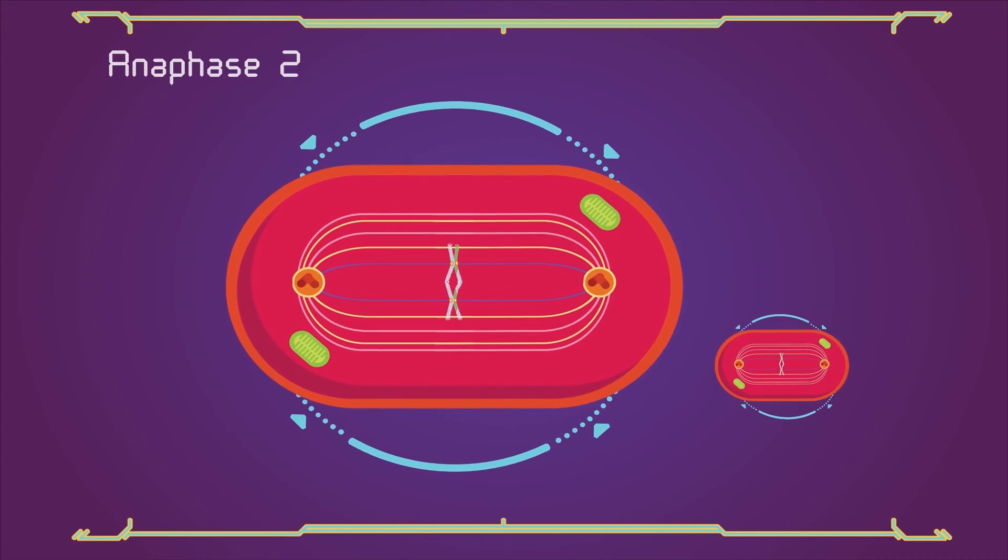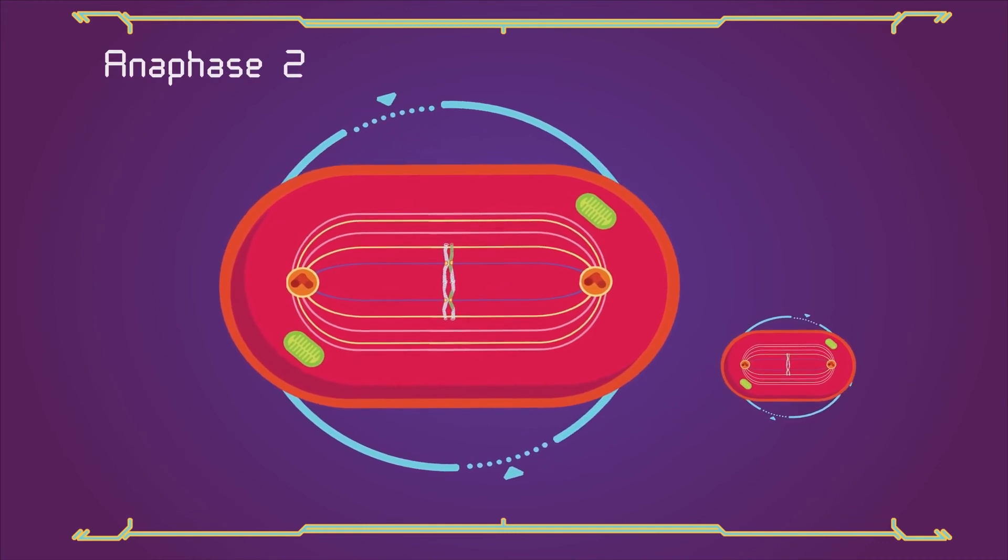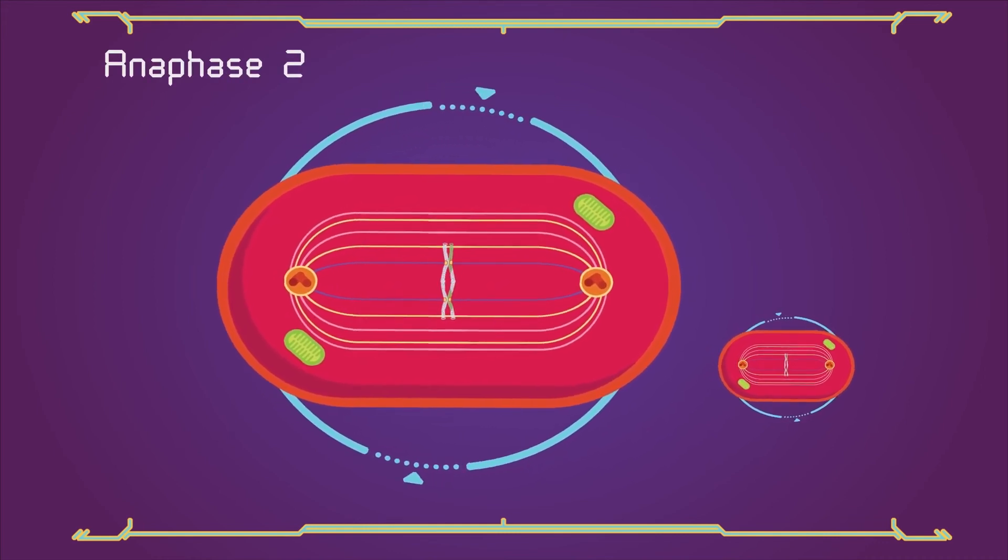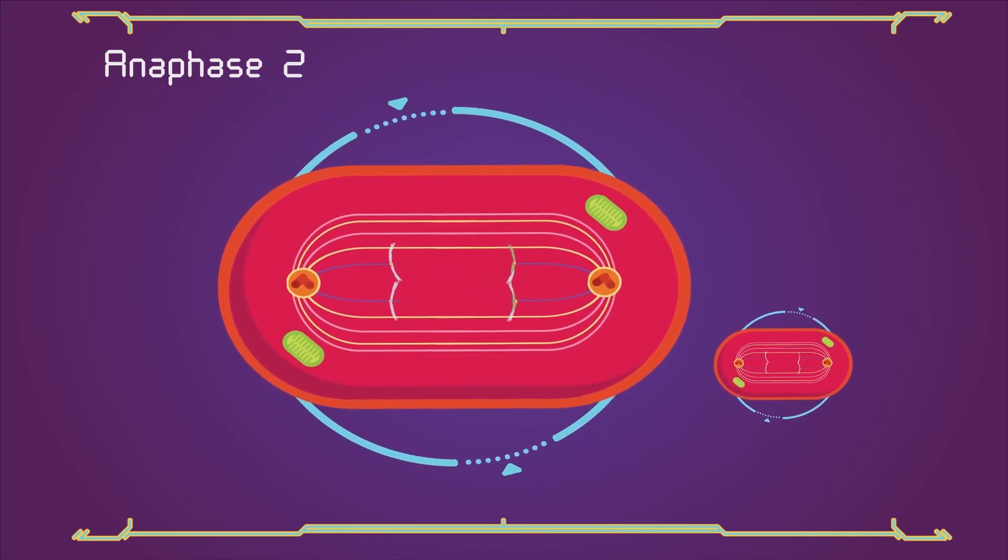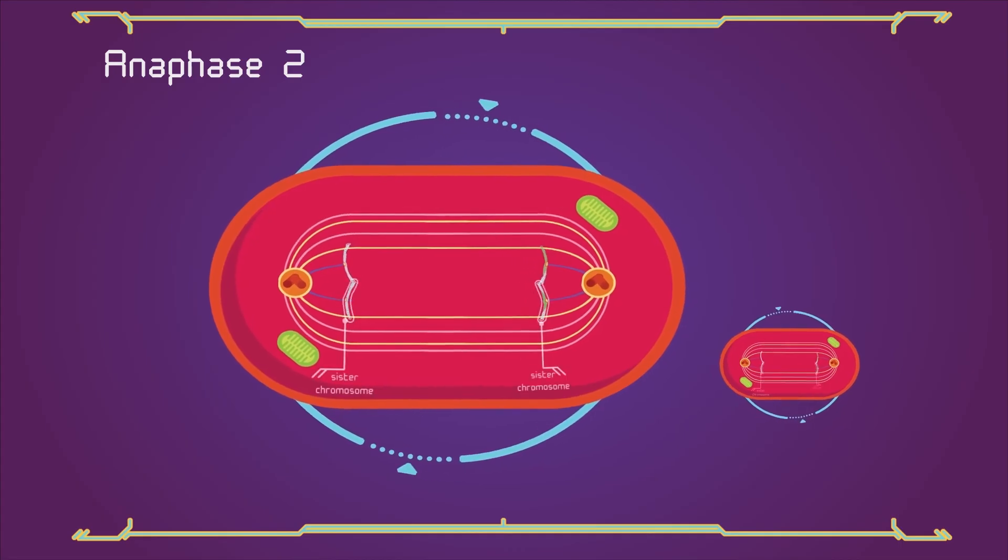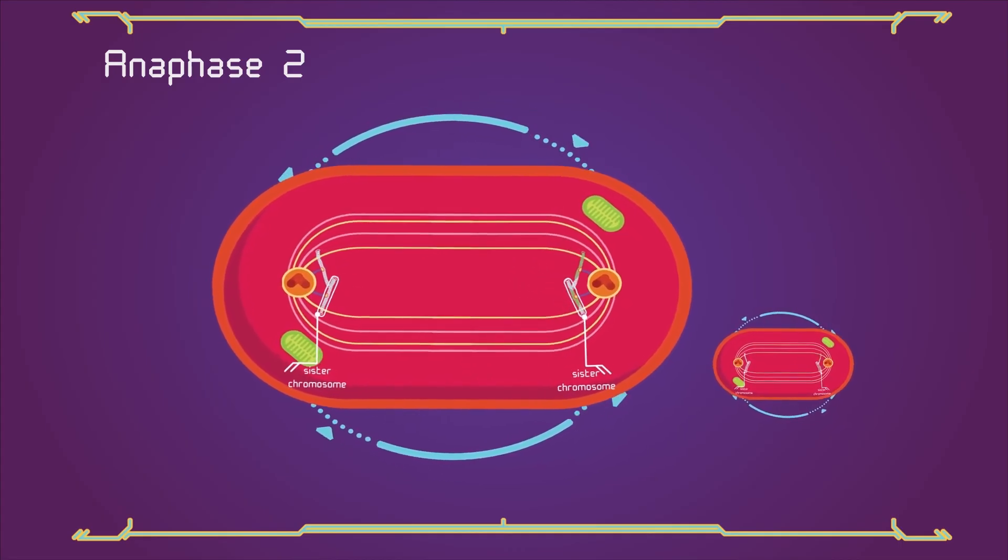This is followed by anaphase 2, in which the remaining centromeric cohesion is cleaved, allowing the sister chromatids to segregate. The sister chromatids by convention are now called sister chromosomes, as they move toward opposing poles.